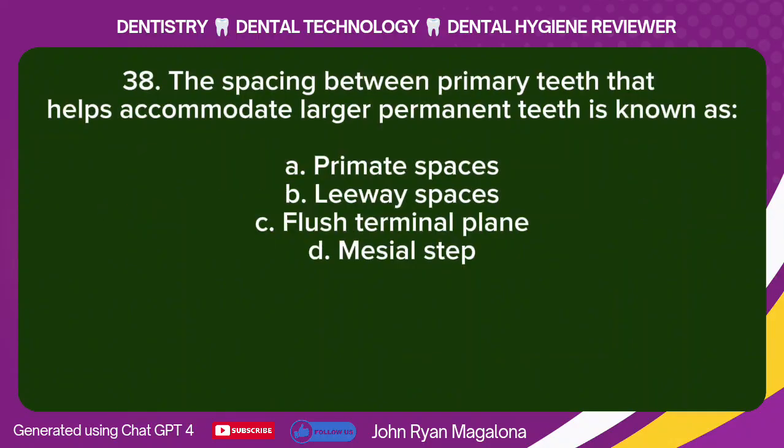Question 38: The spacing between primary teeth that helps accommodate larger permanent teeth is known as: A. Primate spaces. B. Leeway spaces. C. Flush terminal plane. D. Mesial step. Answer: A. Primate spaces.